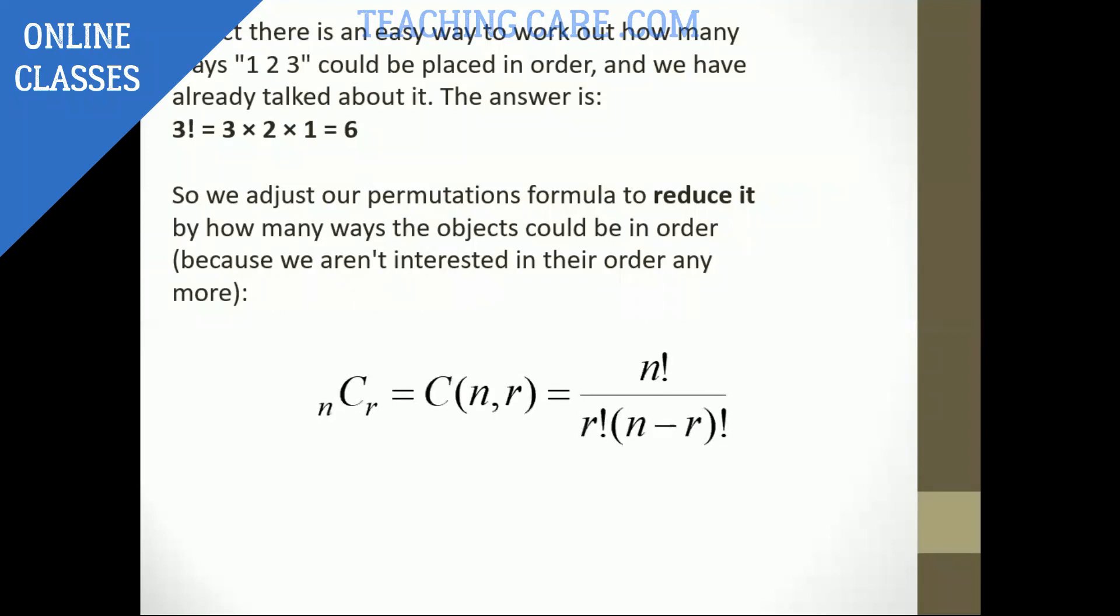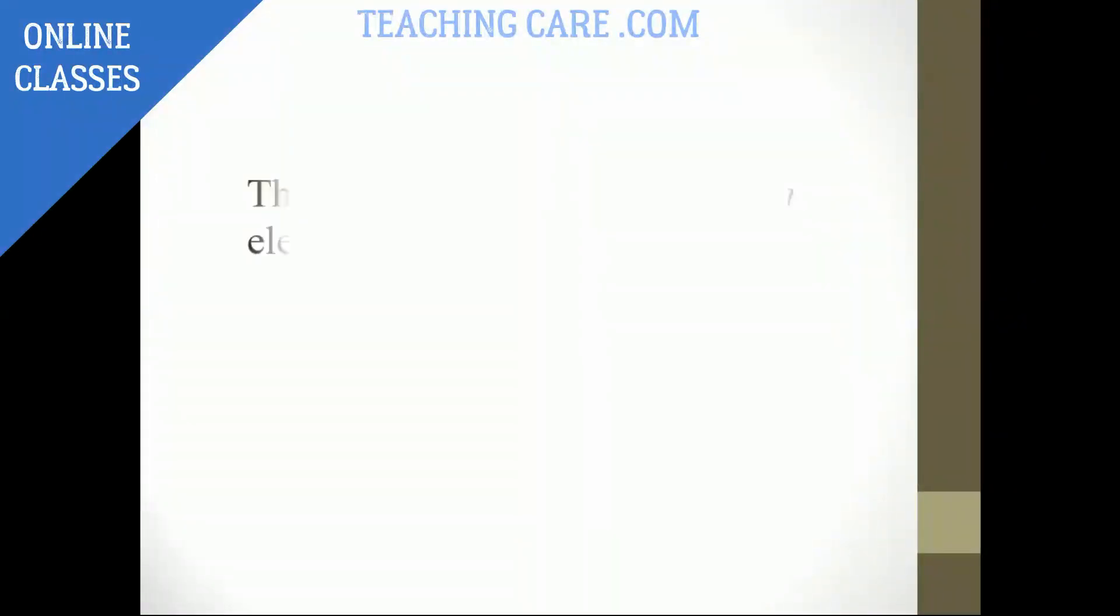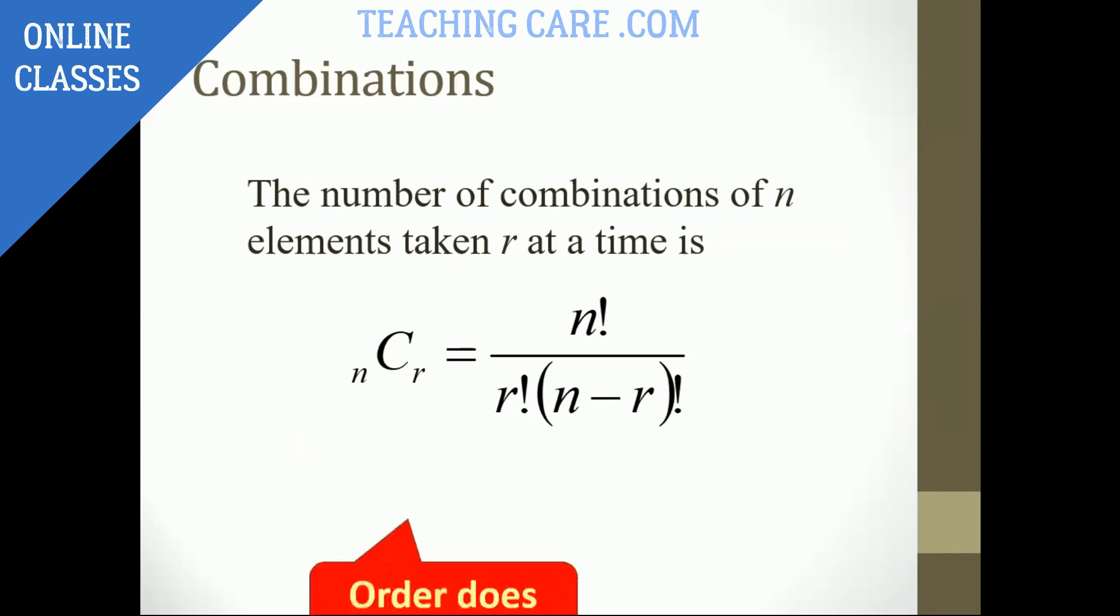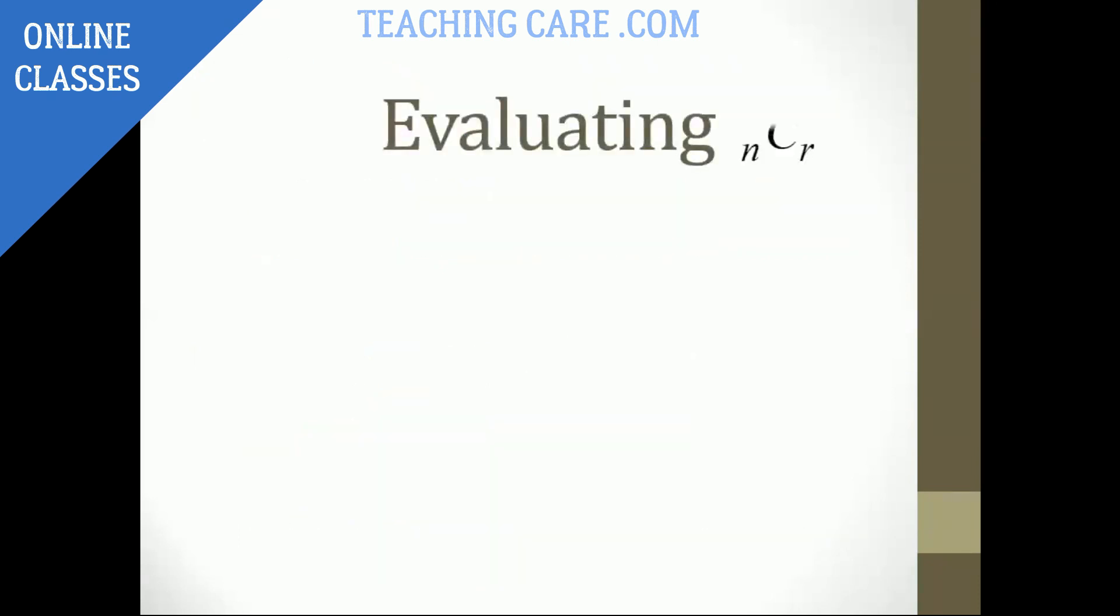So, in general, I'm going to introduce a formula for combination that is NCR. That is N factorial divided by R factorial times N minus R factorial. This is the formula for combination. What is the difference between permutation and this one? You will have a thing of R factorial. In permutation you won't have that R factorial. Order is not important here.